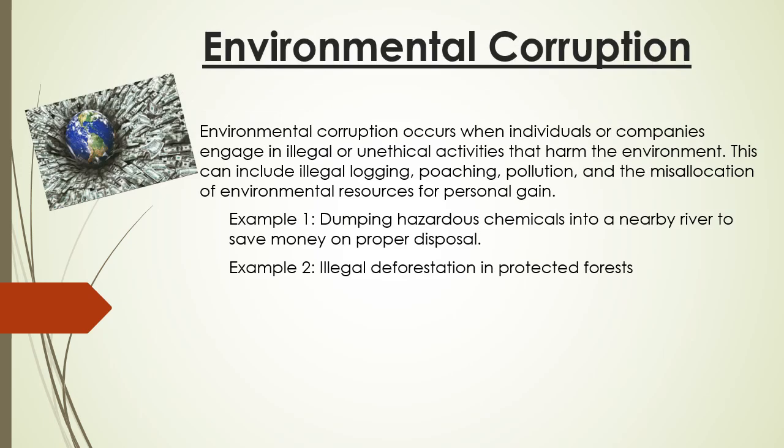Another form of corruption involves illegal or unethical activities that harm the environment. This can include illegal logging, poaching, pollution, and the misallocation of environmental resources for personal gain. First example: dumping hazardous chemicals into a nearby river to save money on proper disposal. Second example: illegal deforestation in protected forests.